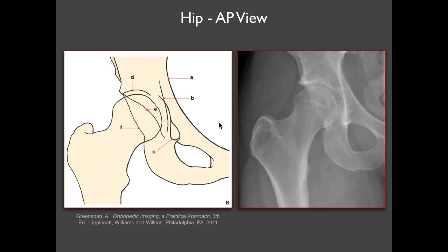Back to the standard AP view of the hip — the key structures to identify are shown in this cartoon: femoral head, greater trochanter, lesser trochanter, and the same anatomy on the radiograph. You have the femoral head-neck junction and the physeal scar. The hip joint space is this lucency between the femoral head and the roof of the acetabulum. This sclerotic line is called the sourcil — an area of normal sclerosis due to the weight-bearing surface of the hip. It's important not to over-interpret that sclerosis.